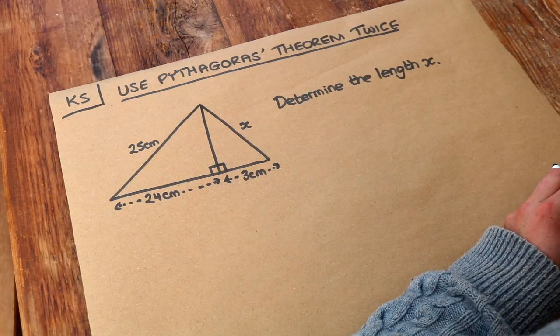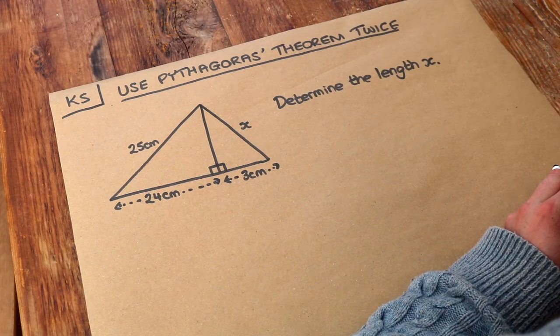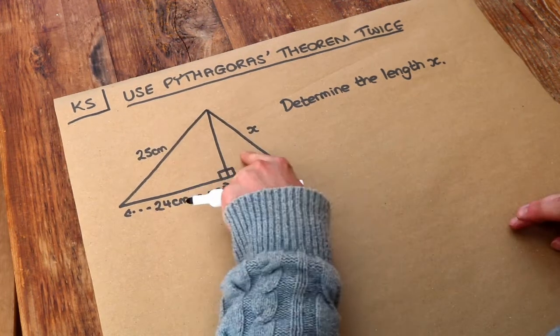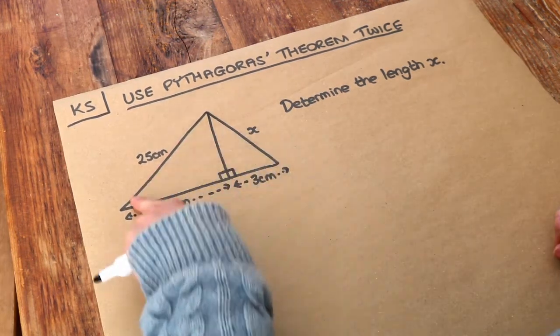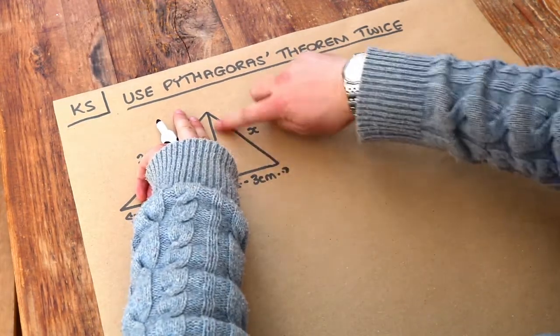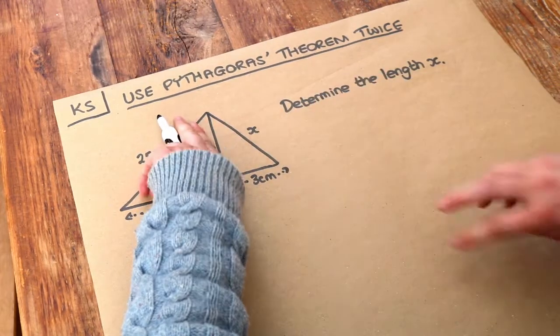Hello and welcome to this Dr. Ross Mass's Key Stage video on using Pythagoras theorem twice. And what I mean by using it twice is that we've got two right-angled triangles, so we might use Pythagoras theorem on this triangle to find this unknown length here, and then once we know this unknown length here, we could use this triangle to work out x.